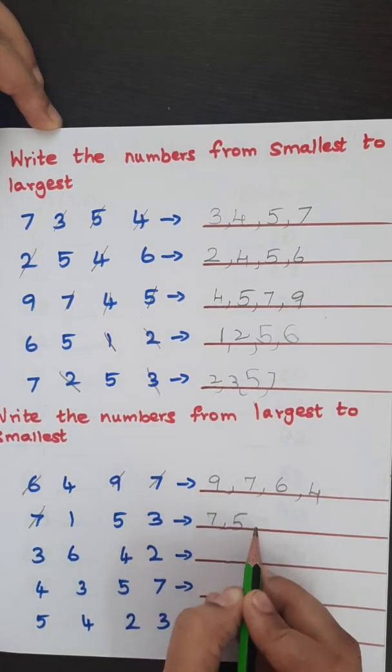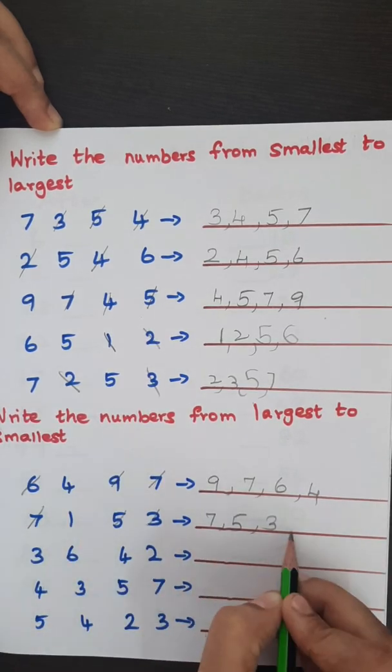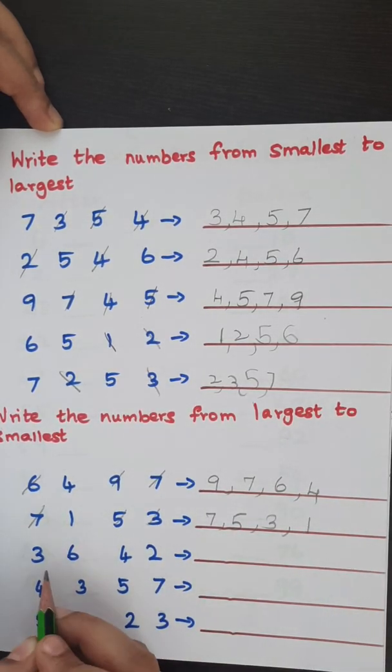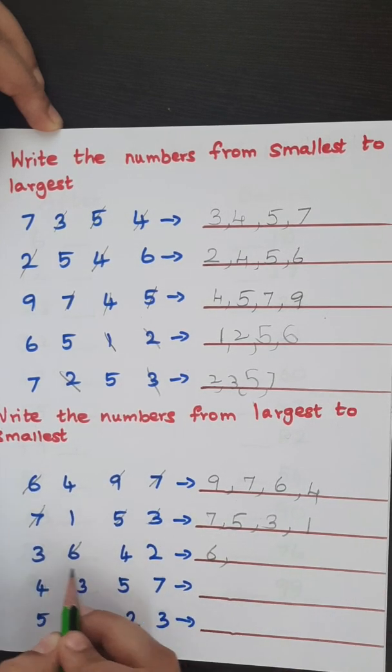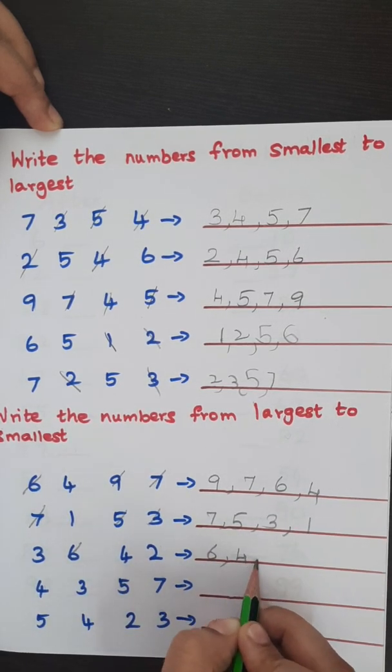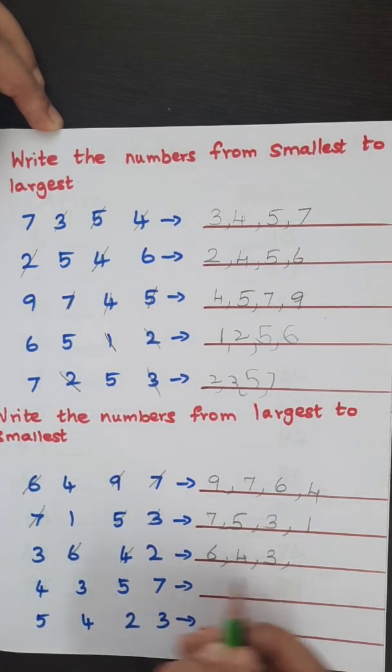Then comes 5, then comes 3, then the remaining one is 1. Here the largest number is 6. Then comes 4. Then among 3 and 2, 3 is the largest one, so we'll write 3. The remaining one is 2.